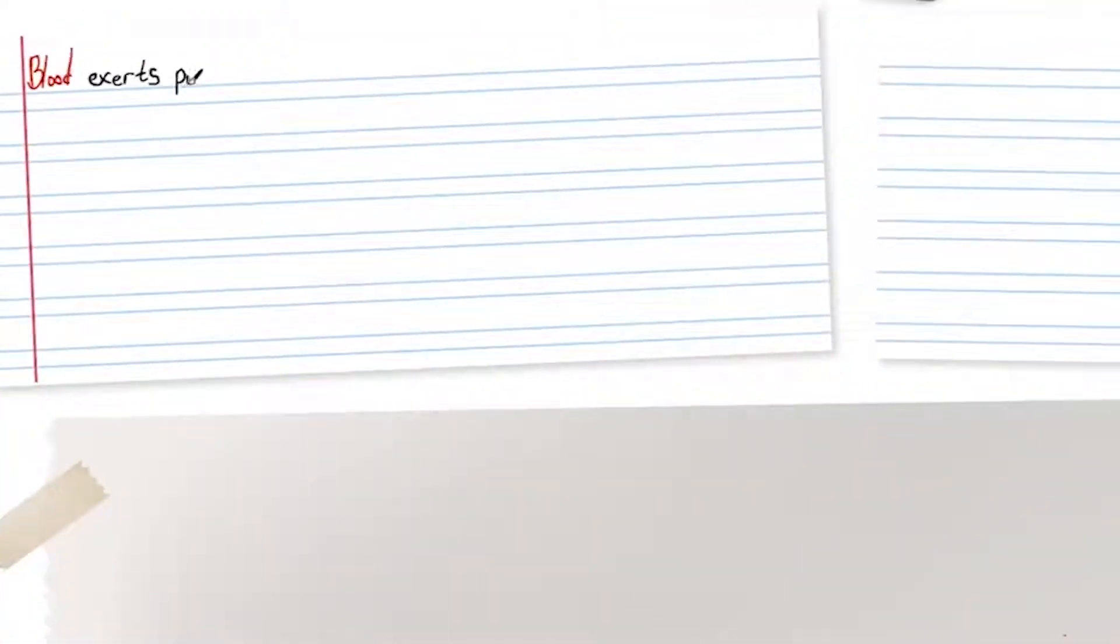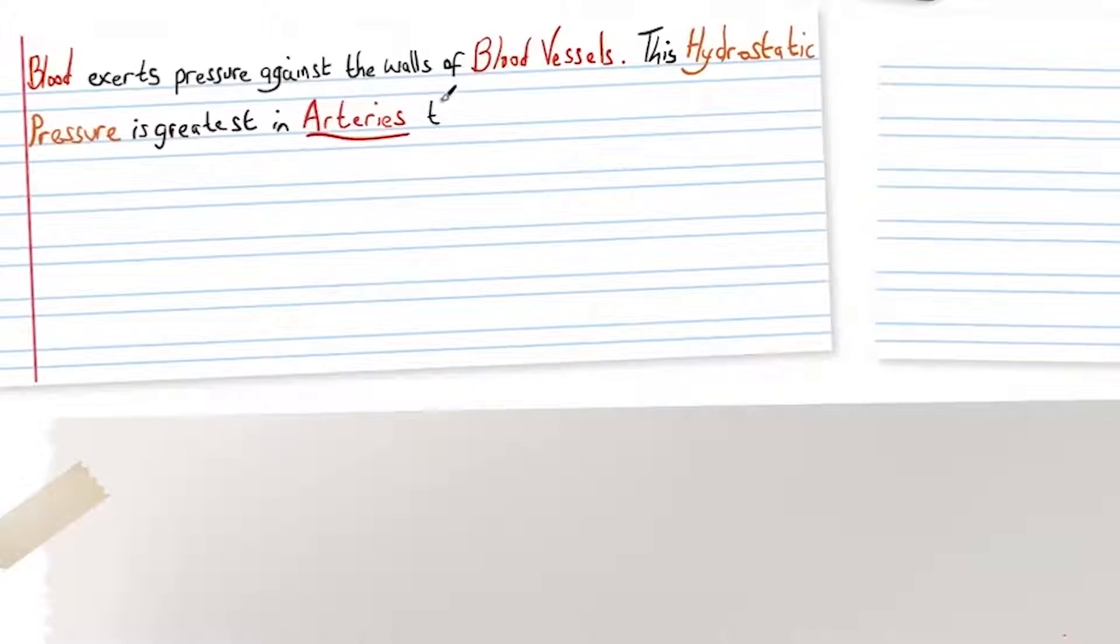So blood exerts pressure against the walls of blood vessels and this hydrostatic pressure is greatest in the arteries than it is in the veins.